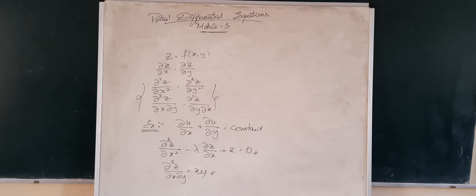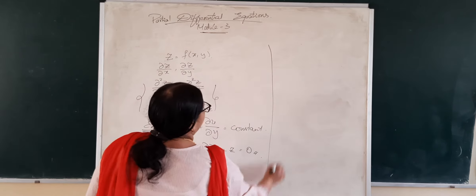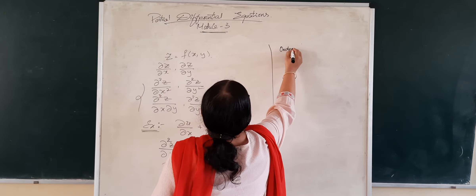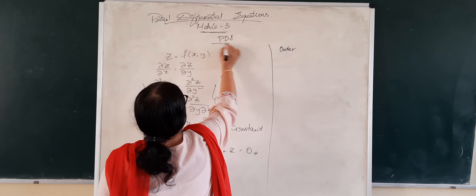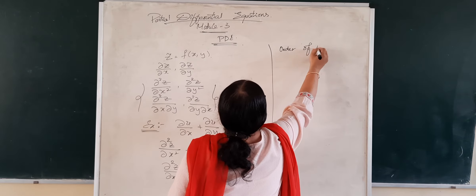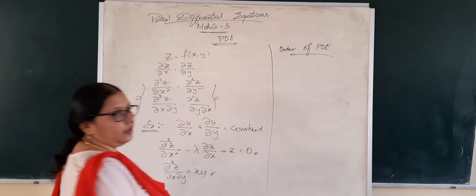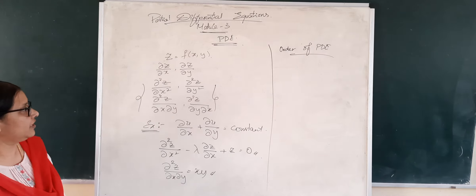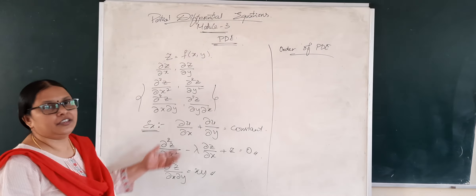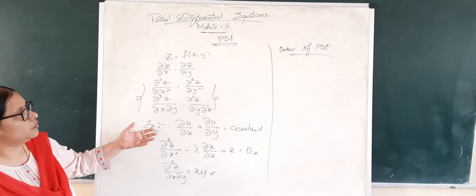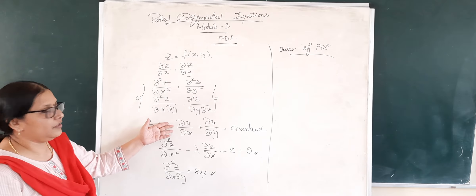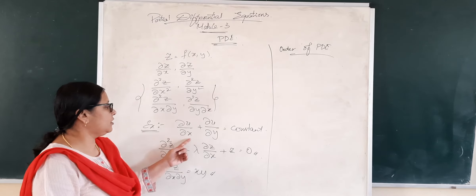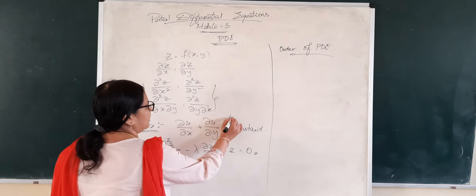This is how we can frame a partial differential equation. These are the differential equations we are going to deal with in this module. Let us see what is the degree and order. First is the order of the PDE — PDE being the short form of partial differential equation. The highest order derivative involved in the equation gives you the order of the PDE. If you observe the first equation, we have only first order derivatives, so the order in that case is 1.